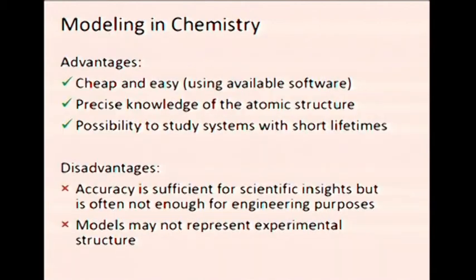In conclusion, the advantages of modeling in chemistry: it is quite cheap and easy when you don't have to develop your own software, it gives you precise knowledge of the atomic structure in your models, and we can study very short-lived systems. As a disadvantage, there is the issue of accuracy — in our case accuracy is enough for science, but not enough to build a chemical reactor based on our values. Also, we still don't know the exact arrangement of atoms in experiments, so our models may not represent the experimental situation exactly.